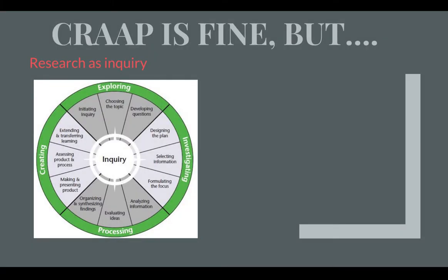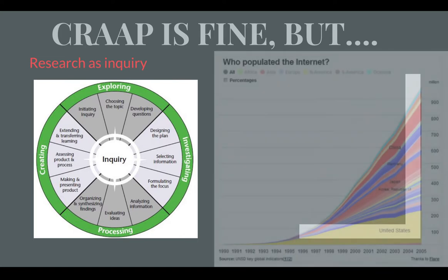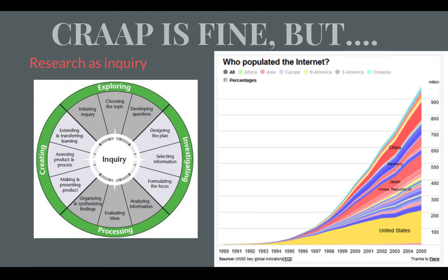What about when our research questions are part of a larger inquiry project? You know this circle of research — you've probably been through it once per class since you were in school. We've learned that looking at data over time sometimes changes our opinion. This chart shows who were the first people to use the internet — the United States in bright yellow is dominating — but look how the increase is greatest when we incorporate other countries, especially in Asia. Sometimes research is a big process, and the truth isn't always obvious right away.